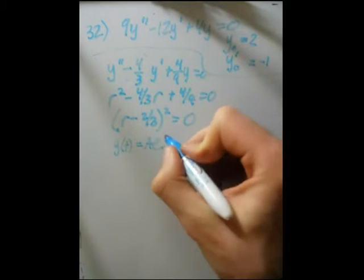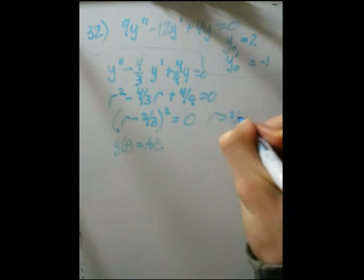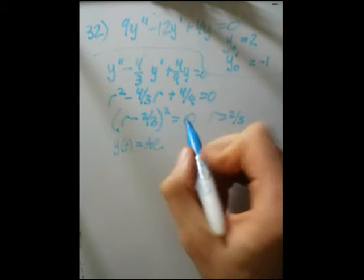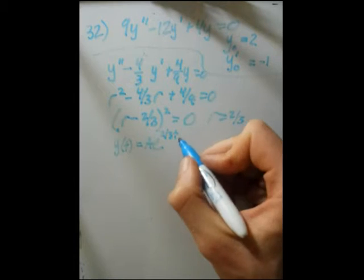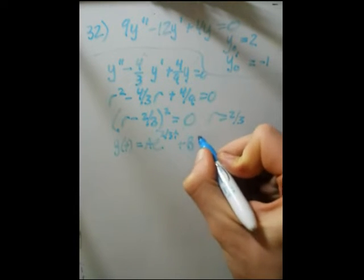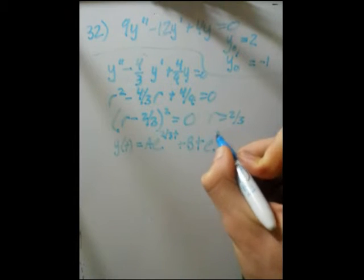As ae to the, now we take that root. That root is positive 2 thirds to satisfy this equation. So we take positive 2 thirds up here, times t, and now plus b, and now our other independent, linearly independent solution is multiplied by t. 2 thirds t. Okay, so this is our generic solution. Now we need to implement the boundary conditions.